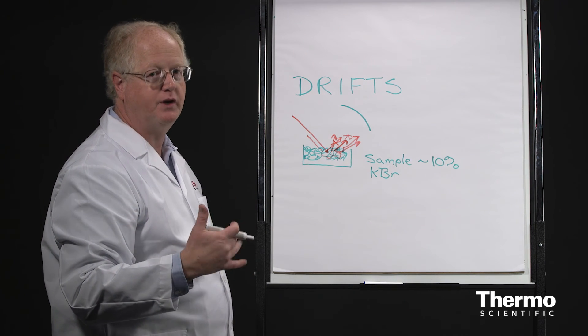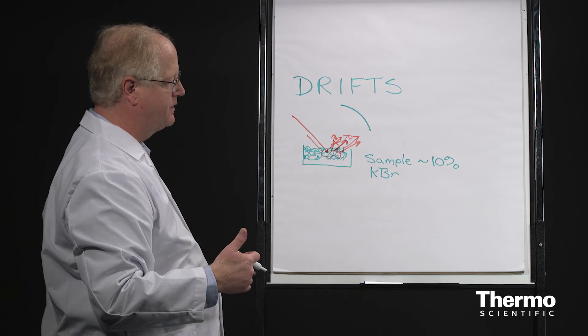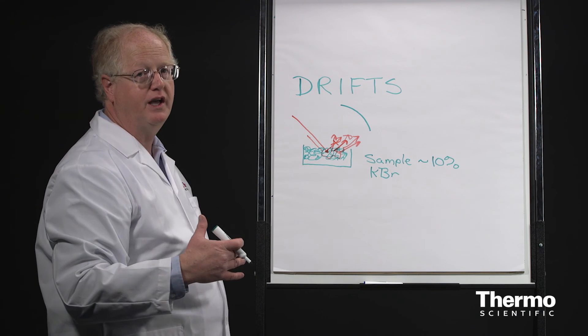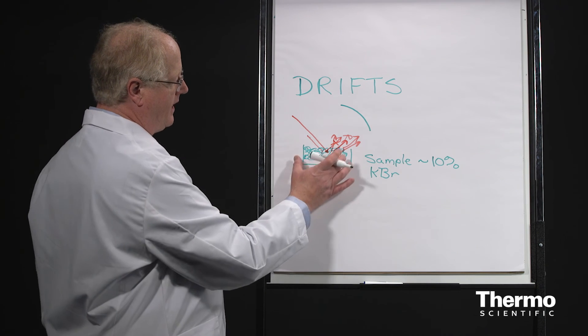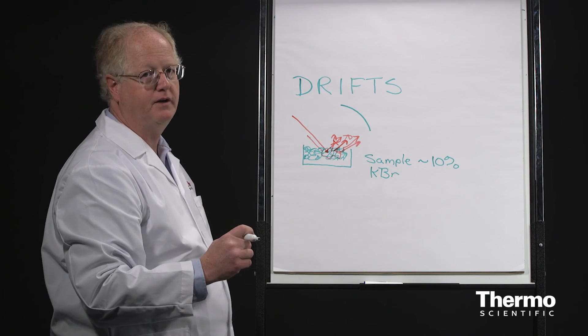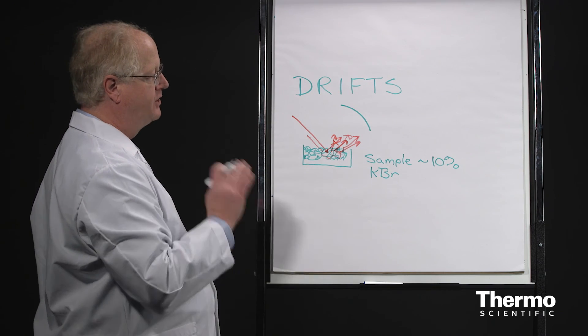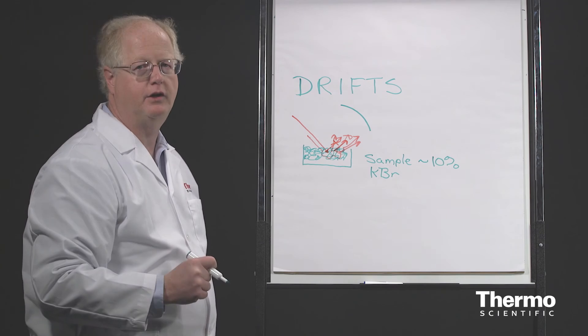There are also times when it works better than other methods for certain kinds of samples, especially when you get into the near-infrared. Diffuse reflectance is very common in near-infrared samples. So that's a little bit about drifts. Now let's go have a look.